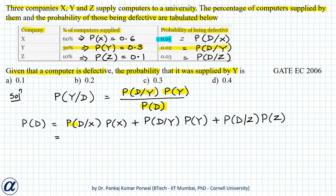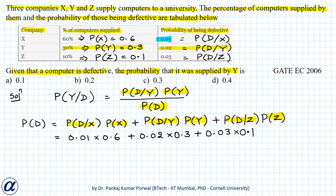All these probabilities are given in the question, so I can write: 0.01 × 0.6 + 0.02 × 0.3 + 0.03 × 0.1. Simplifying by doing the multiplications and additions, I get P(D) = 0.015.